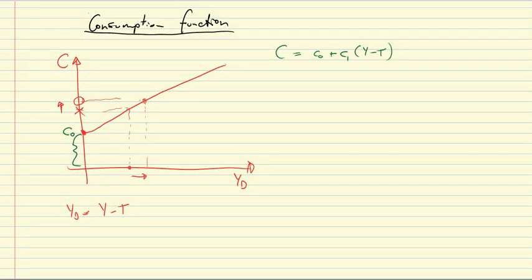But then, as their disposable income rises, they spend of any additional dollar a fraction C1. Very important, C1 is between 0 and 1. C1 is, of course, the marginal propensity to consume, MPC.